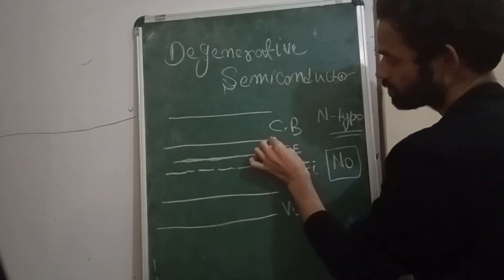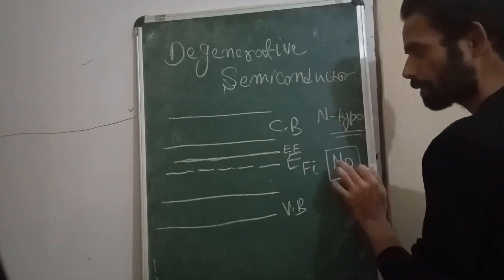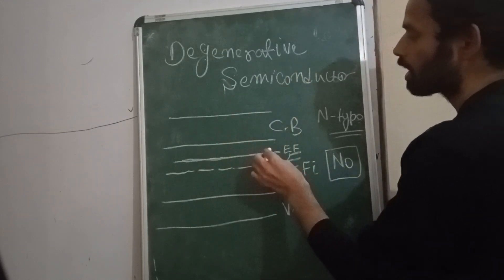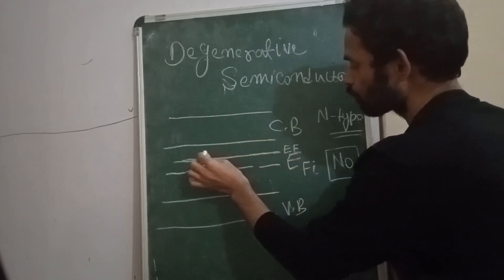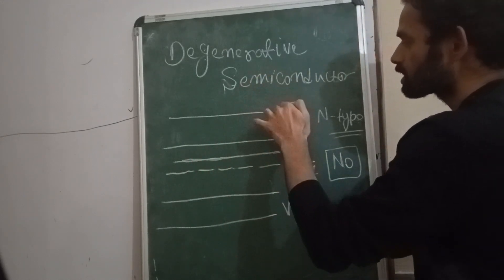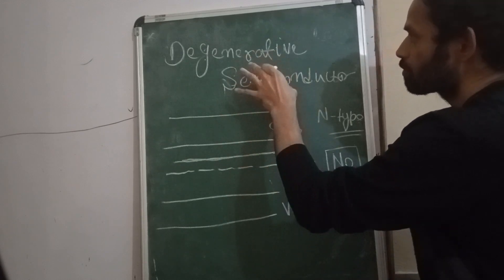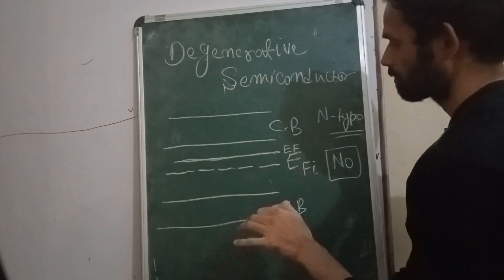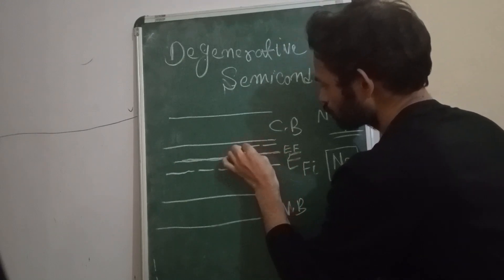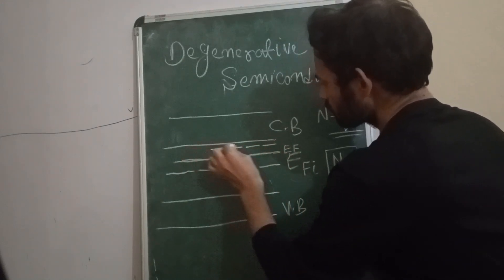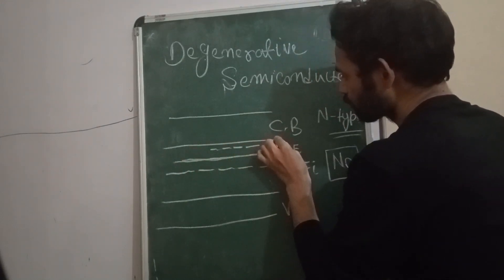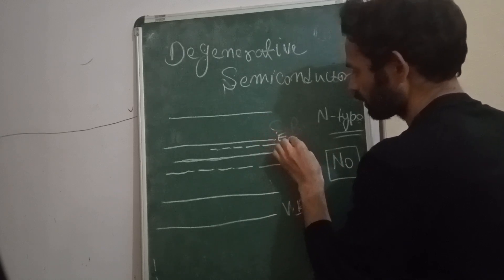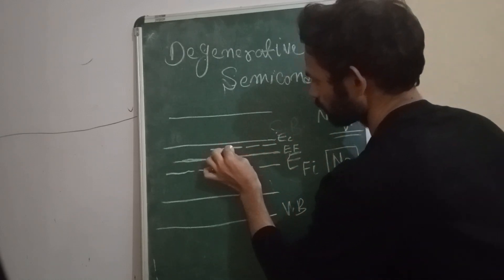We are adding pentavalent impurity — up to what level should it go so that the semiconductor remains non-degenerative? This is the edge of the conduction band.